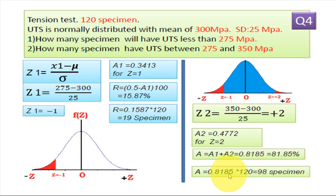That is 81.85%. So total number of specimen falling equal to 0.8185 into number of specimen total, so it comes 98 specimens. So there are 98 specimens having ultimate tensile strength between 275 MPa to 350 MPa. So this is the solution for case number 2.